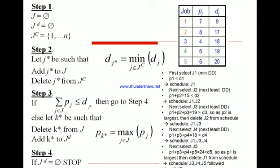The algorithm goes like this: there's a due date for each job and a processing time for each job. So we start with the minimum due date, which is job one.